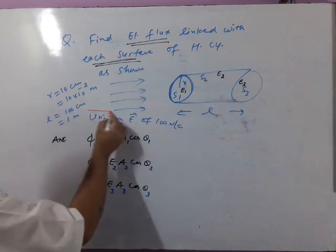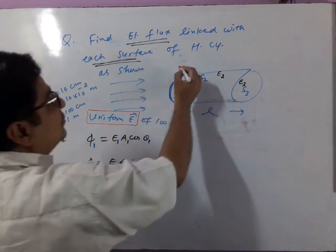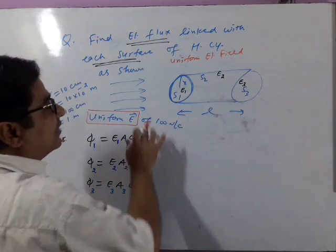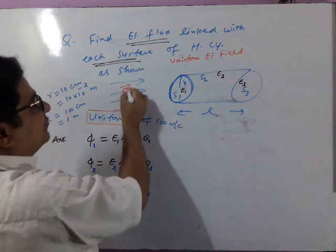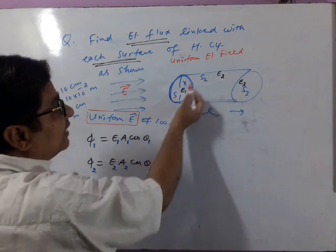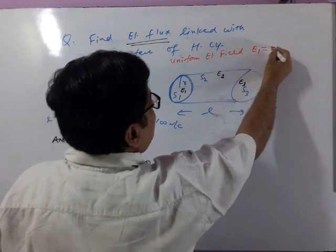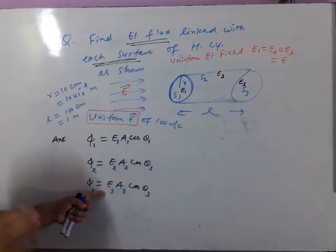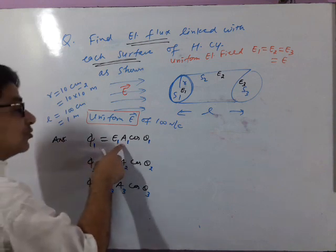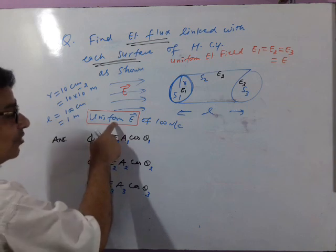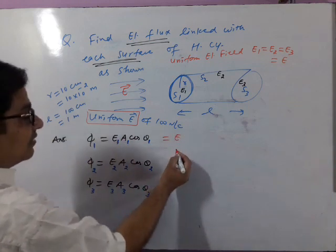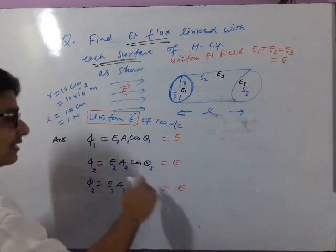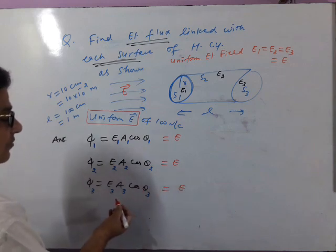Since this is a uniform electric field, E is constant in magnitude and direction everywhere. So E₁ = E₂ = E₃ = E. While conceptually E₁ is the field passing through area 1, for a uniform field we simply write E in all three cases: φ₁ = E·A₁·cosθ₁, φ₂ = E·A₂·cosθ₂, φ₃ = E·A₃·cosθ₃.